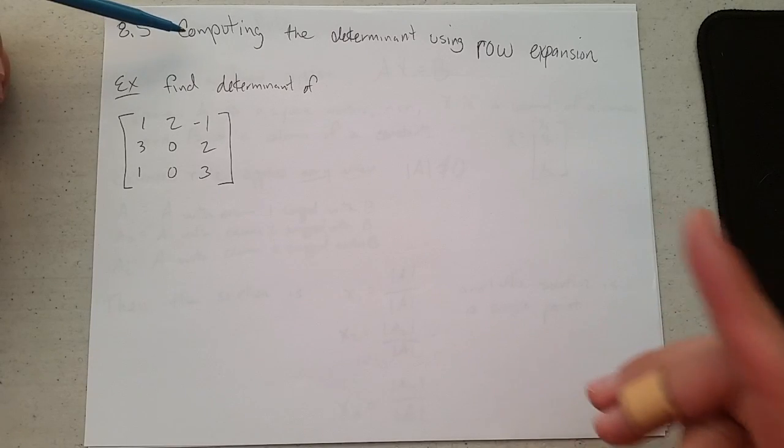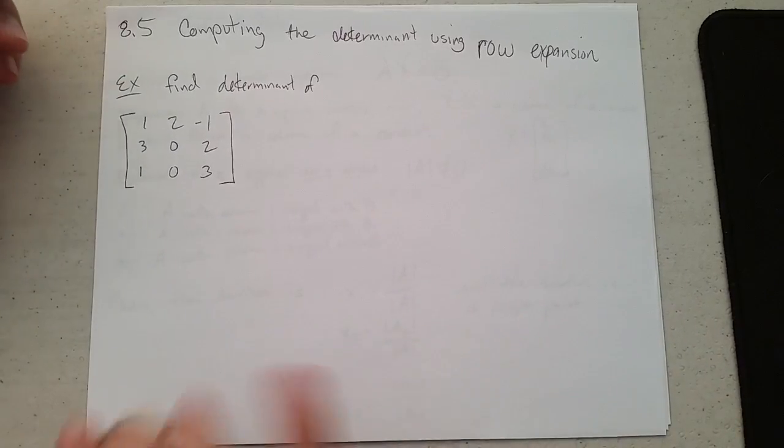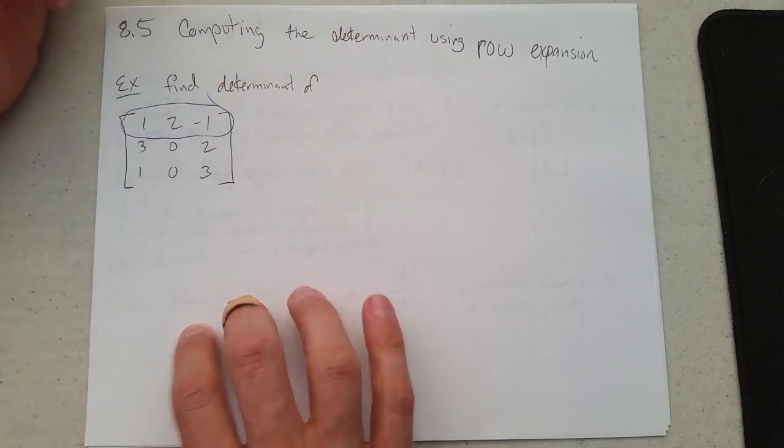So we're going to compute the determinant using row expansion, and we're going to find the determinant of this 3 by 3 matrix. We're going to row expand across row 1. When in doubt, just go across row 1.